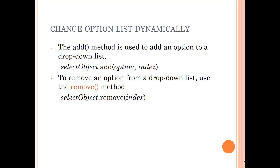We'll be discussing how you can change the option list dynamically. We've already covered what an option list is — whenever you want to present a number of options to the user, you can provide it with the help of an option list, also called a drop-down list. To add an object dynamically using code, you can use the add method. The syntax is: select_object.add(option, index) — the first parameter is the option to be added, the second is optional. If you don't give an index, it will be added as the last option by default.